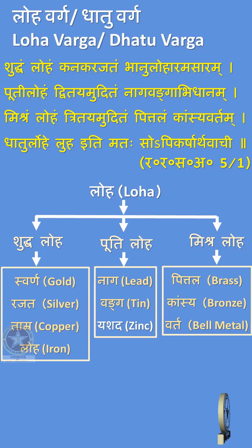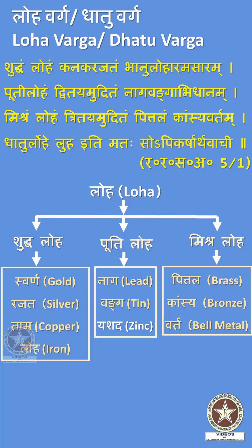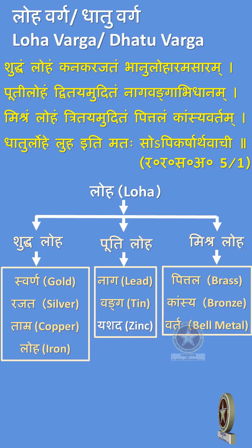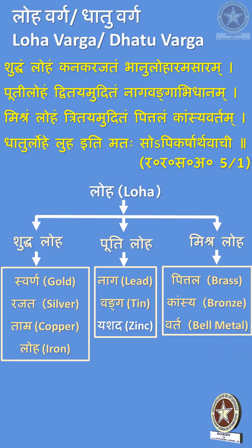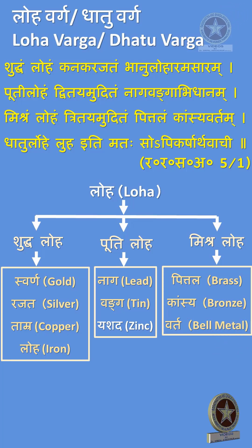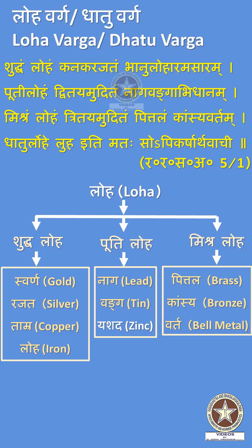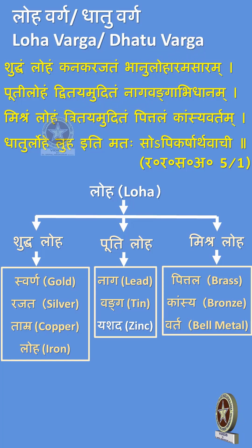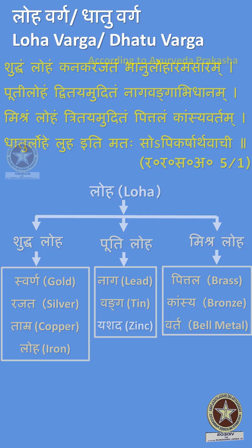In total, the Dhatu Varga classification is as follows: Shuddha Loha includes Kanaka, Rajata, Tamra, Loha. Puthi Loha includes Naga, Vanga, Yashada. Mishra Loha or Alloys includes Pithala, Kansya, and Vartaloha.